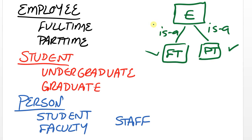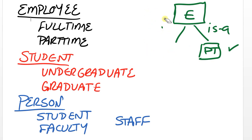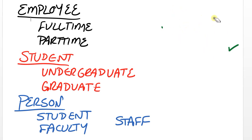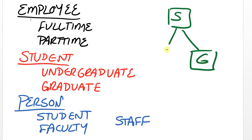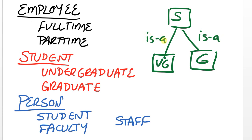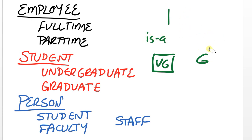In general, moving from the top of the hierarchy down, we're going more specific — that's always the case with supertype-subtype. Another example might be student. We could have student at the top of the hierarchy and then graduate students and undergraduate students below. A graduate student is a student, and an undergraduate student is a student as well.